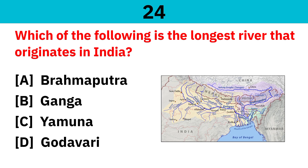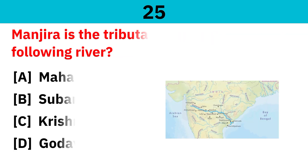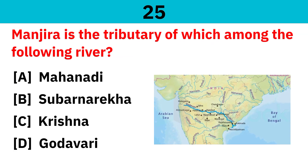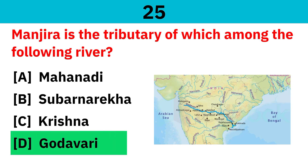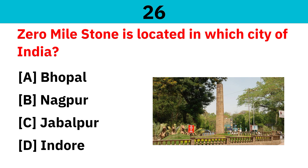Which of the following is the longest river that originates in India? Correct answer is Ganga. Manjira is the tributary of which among the following rivers? Correct answer is Godavari. Zero Mile is located in which city of India? Correct answer is Nagpur.